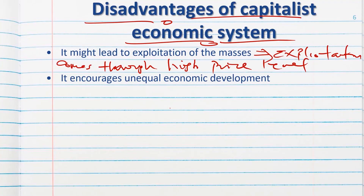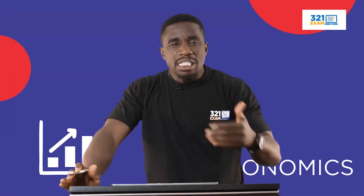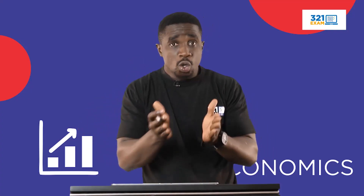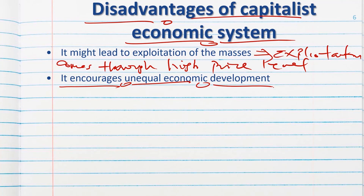Number two disadvantage: it encourages unequal economic development. Private individuals can decide to focus on a particular sector and leave sectors they do not benefit from, causing development to be uneven — a particular area would be developed while another would not.